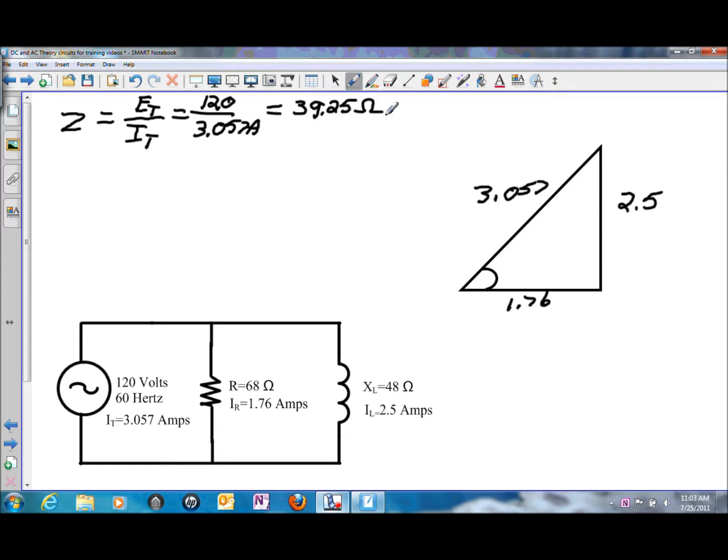So trying to reflect on series circuits and how the oppositions to current flow add together, in a parallel circuit any additional branches added are going to decrease the overall opposition to current flow, which means that current flow will go up.